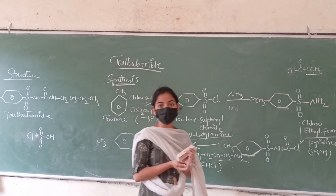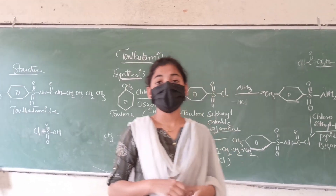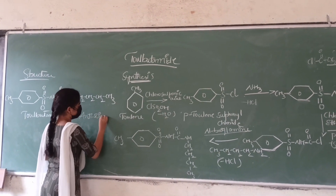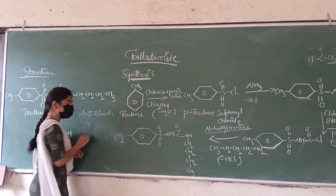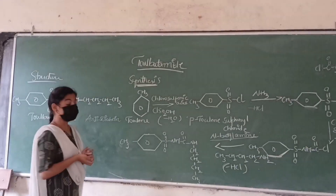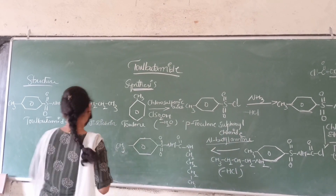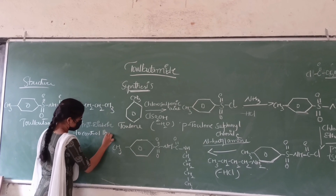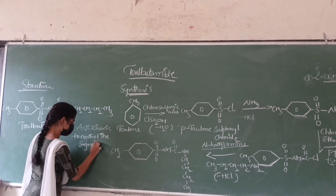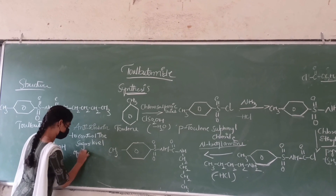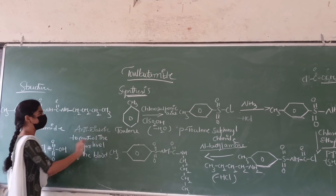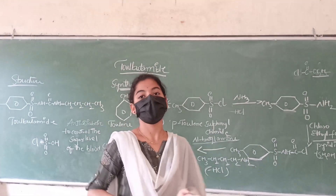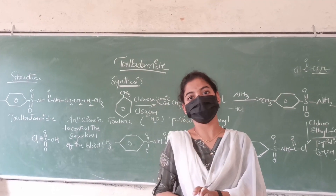The activity of the drug is: this drug is also known as an anti-diabetic drug. It is used for the treatment of diabetes and it is used to control the sugar level of the blood. So it is all about the synthesis and therapeutic activity of Tolbutamide. If you like this, please like, share and subscribe.